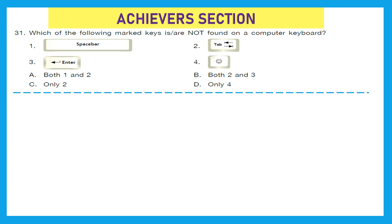Moving to our next section, the Achievers section, which carries double marks for each question. Question 31: Which of the following marked keys is not found on a computer keyboard? Spacebar — it's there. Tab — also there. Enter — also there. A smiley key — there is no such key on a computer keyboard. So the right option is D, only the smiley key is not found on a computer keyboard.